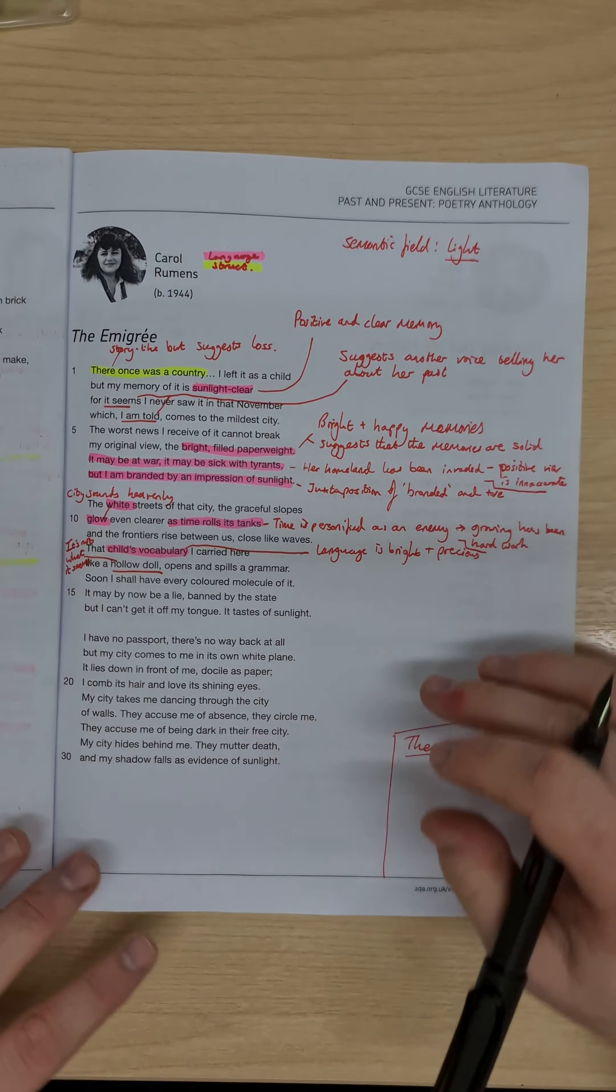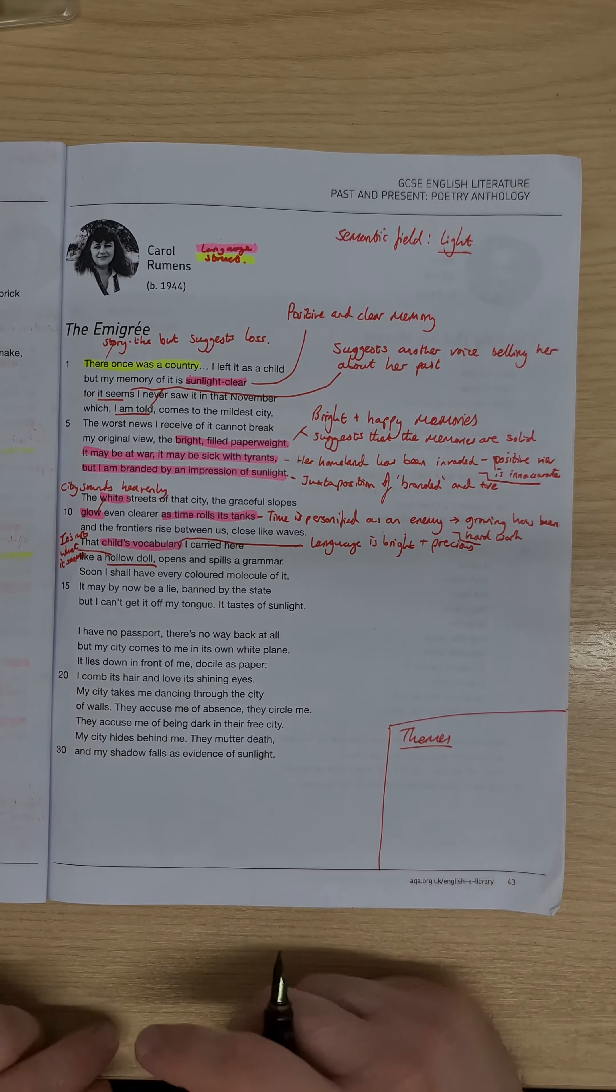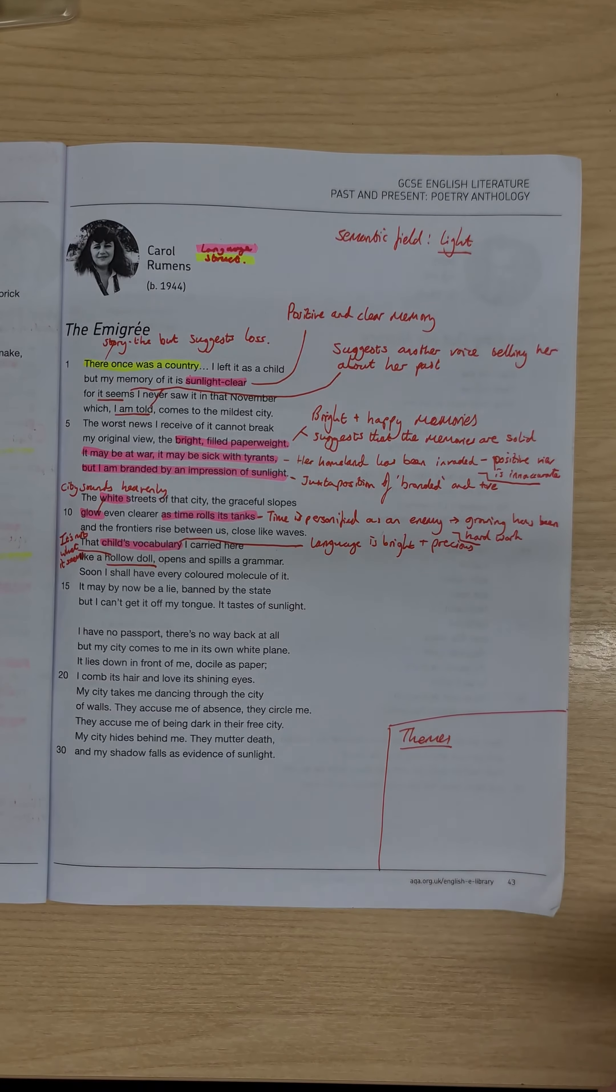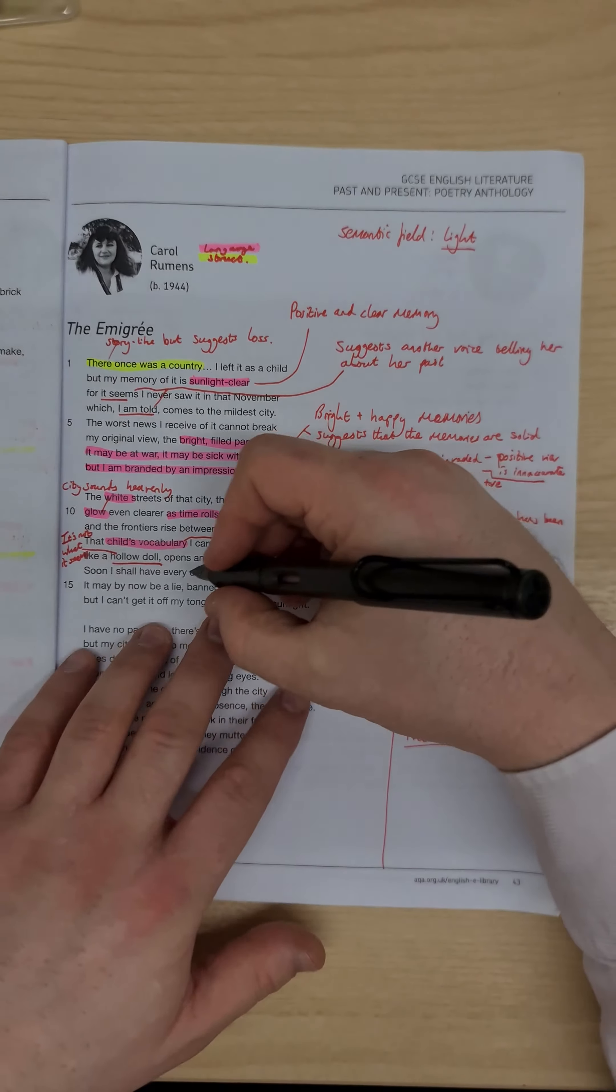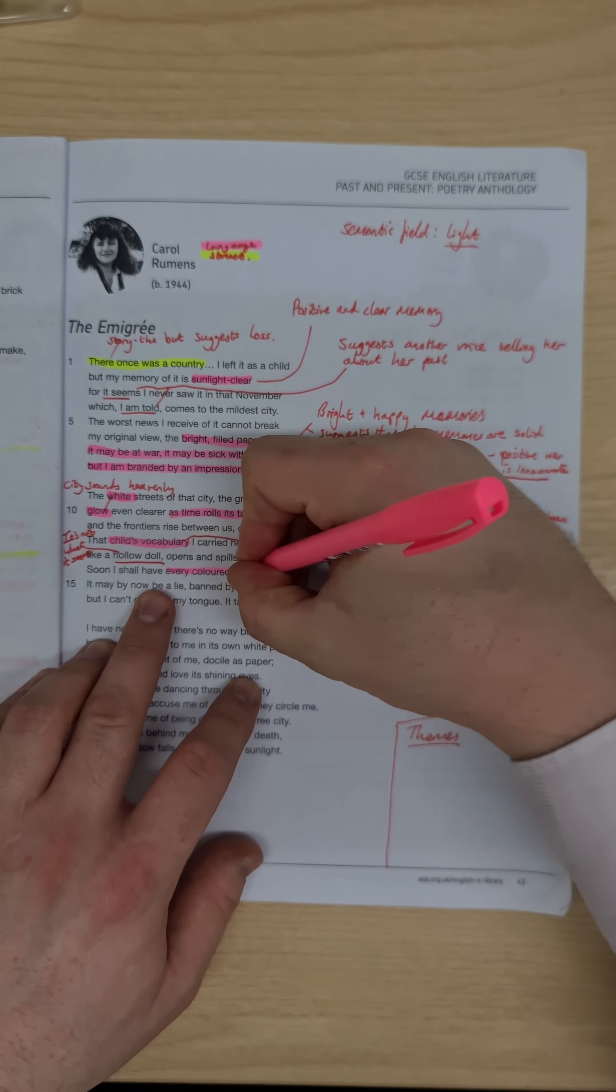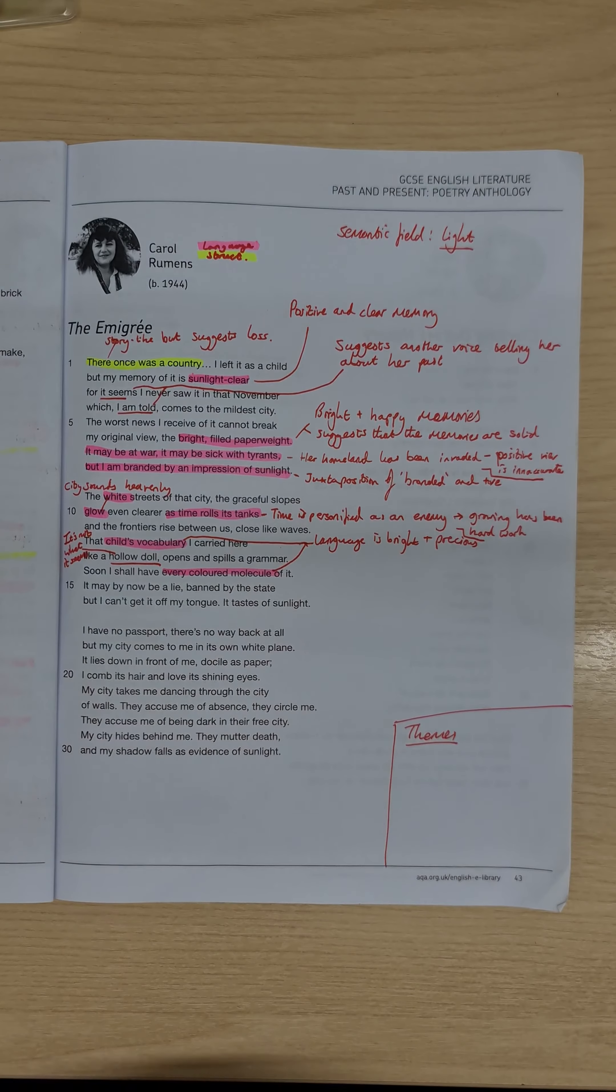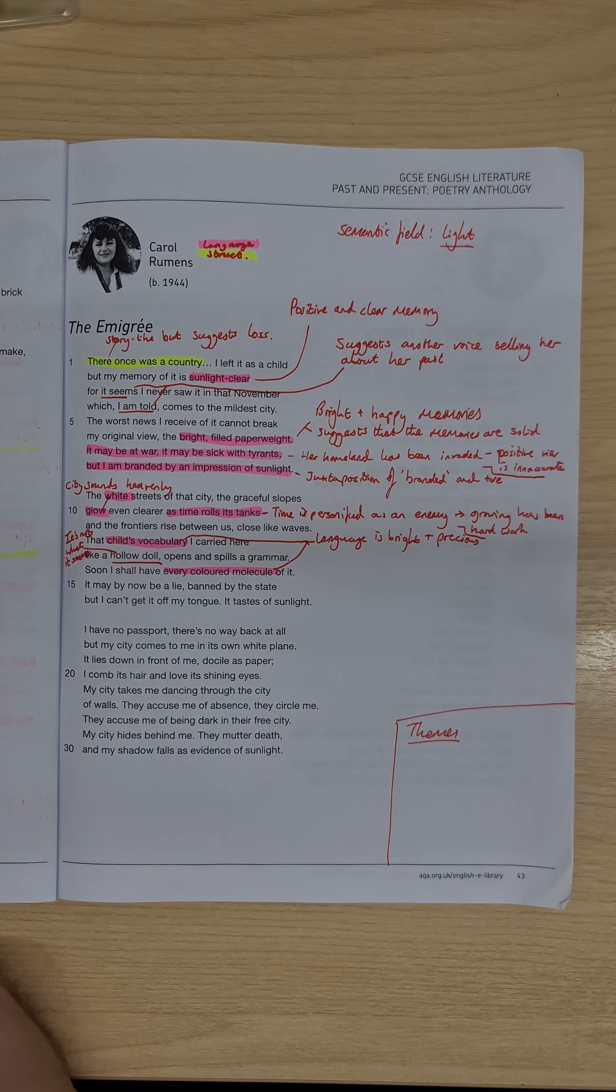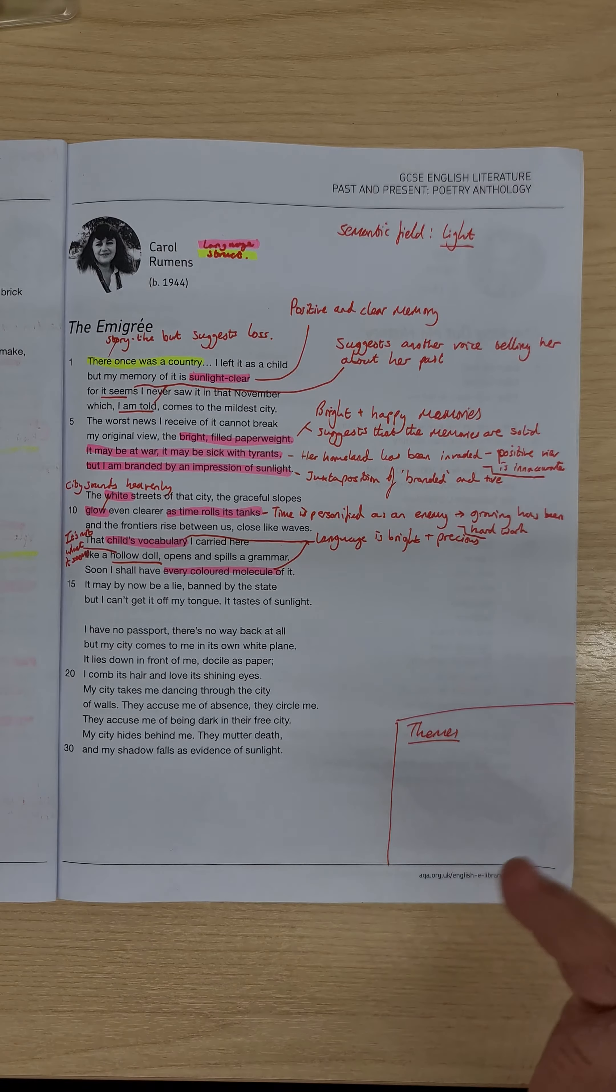So this idea that she's been told, oh, maybe she's been told, oh yes, we're just going on holiday, something like that. But she's been given this idea to believe that she's worked out later on, isn't. The hollow doll opens and spills a grammar. Soon I shall have every coloured molecule of it. And again, that links to that child's vocabulary, that every coloured molecule, the language being bright and precious. Also suggests this almost sanctity of knowledge. We have here as well, as well as the every coloured molecule, we also have further down another link back to this bright and precious vocabulary. We'll come back to that later.